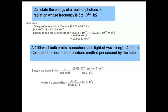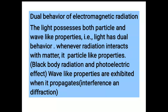We can conclude that some properties can be explained by wave nature and others by particle nature, so electromagnetic radiations possess dual behavior — both particle as well as wave-like properties. Whenever radiations interact with matter, particle-like properties are highlighted, for example in black body radiation and the photoelectric effect. Wave-like properties are exhibited when radiation propagates, for example in interference and diffraction.